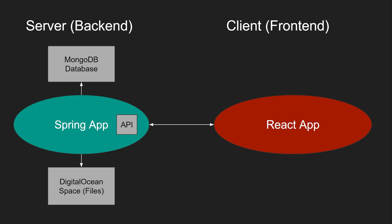In more detail: the back end is a Spring Boot application with starters like Spring Web, Spring Data, and MongoDB, connected to a MongoDB database hosted on MongoDB Atlas. Digital Ocean Spaces acts as a file storage server — the Spring app uploads and retrieves files from it. The Spring app also exposes a RESTful API over HTTP that the React front end calls to get, upload, update, and delete songs.